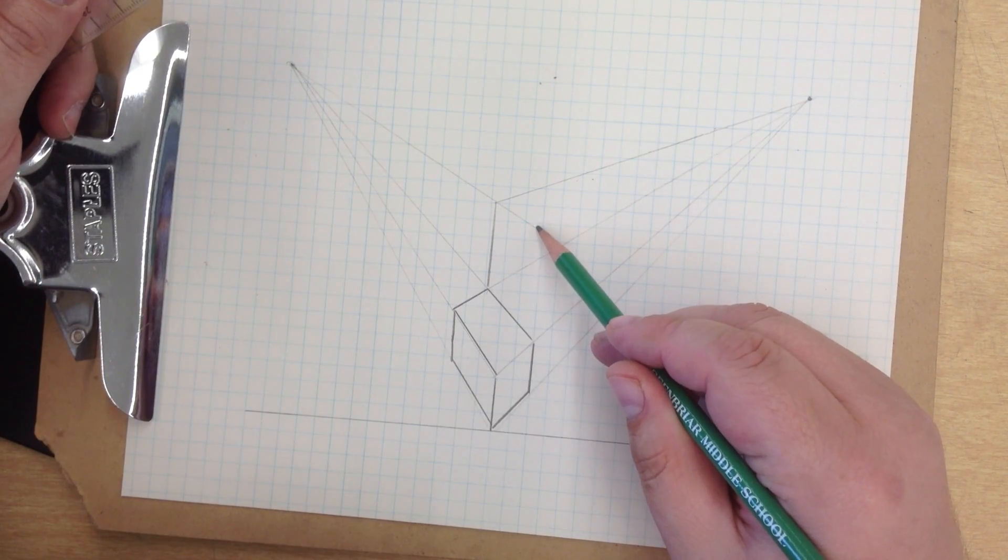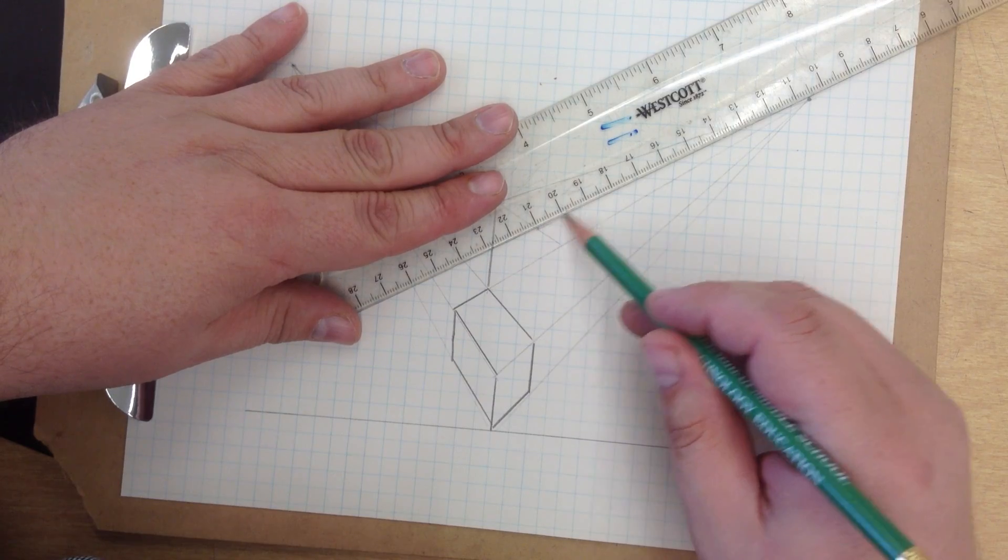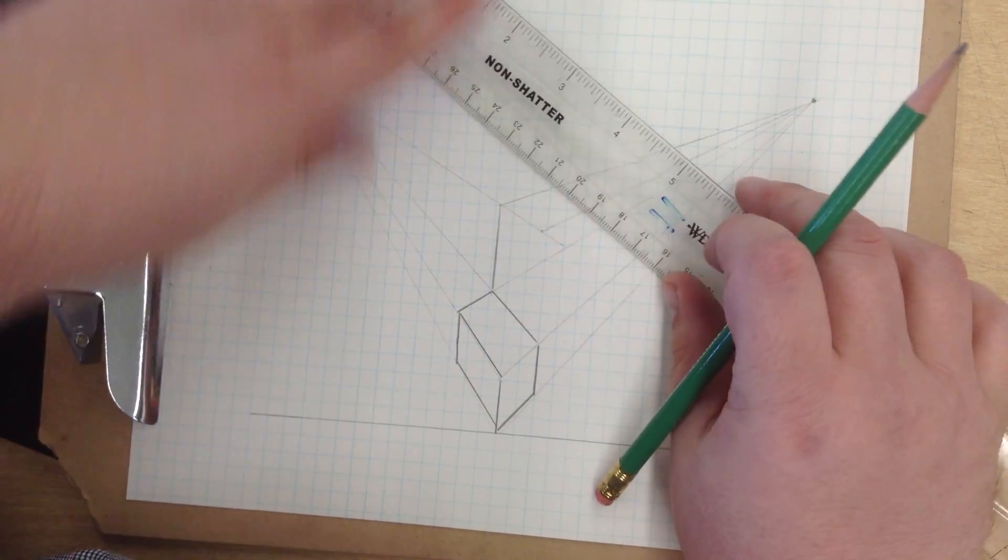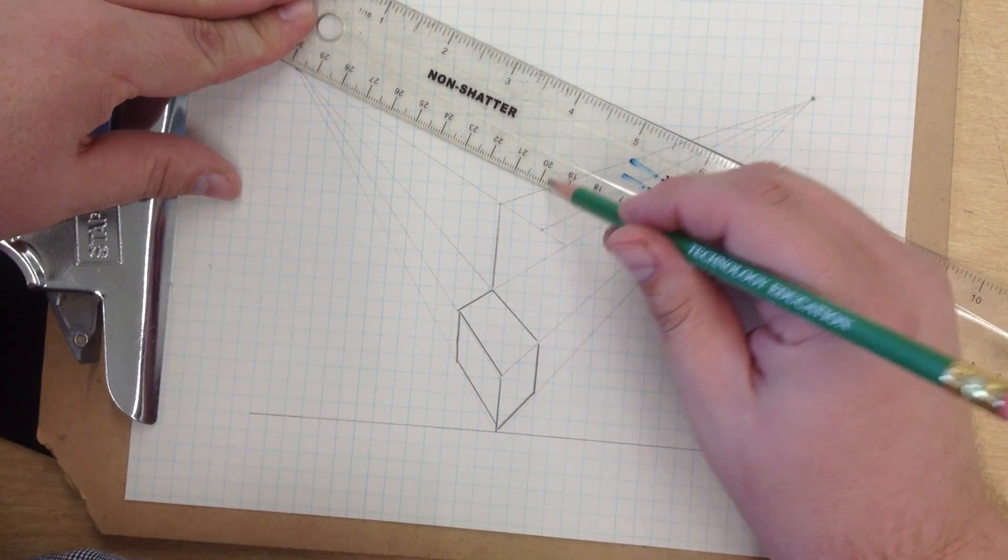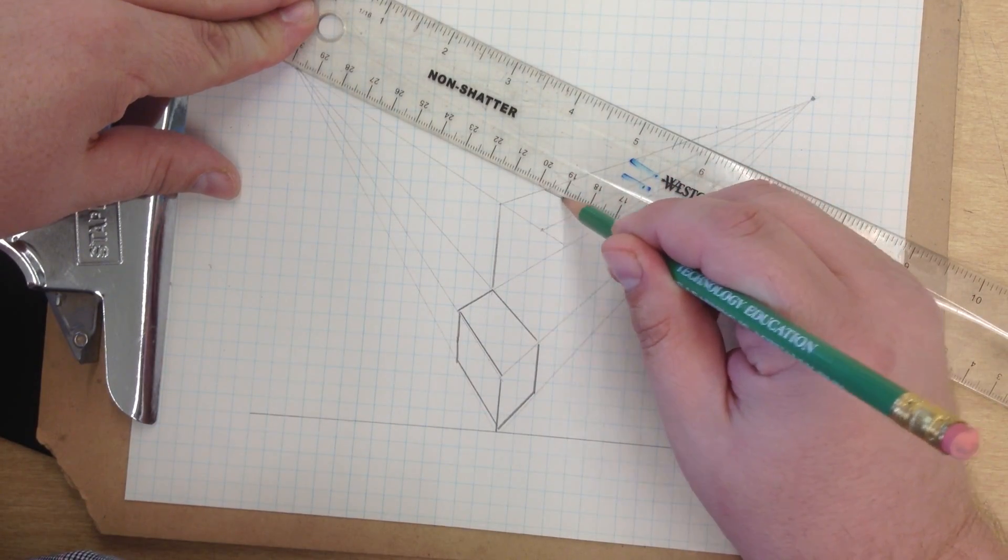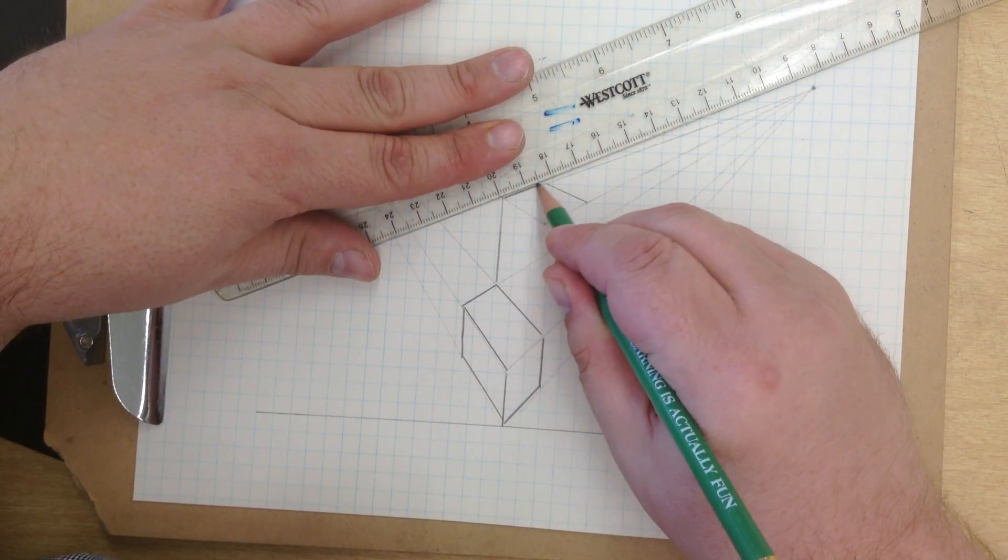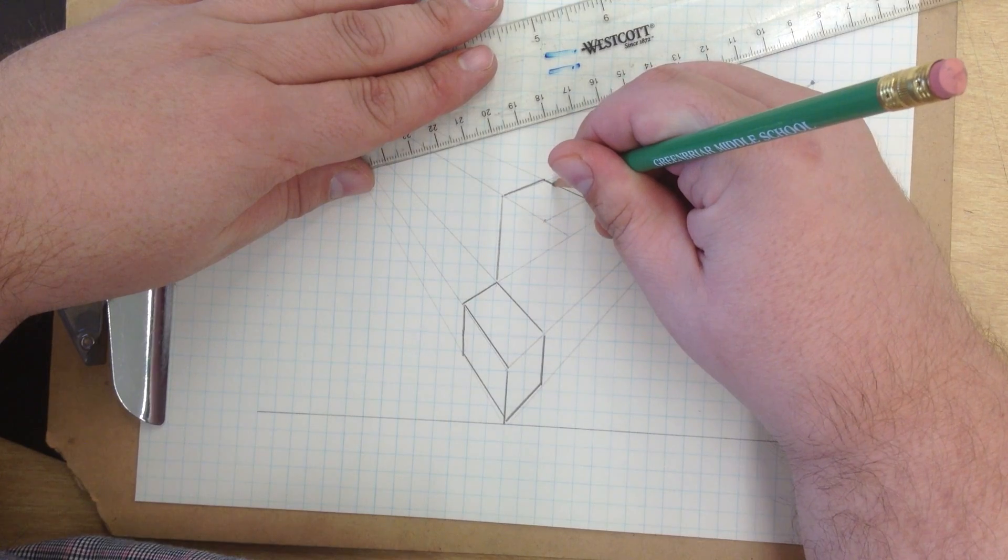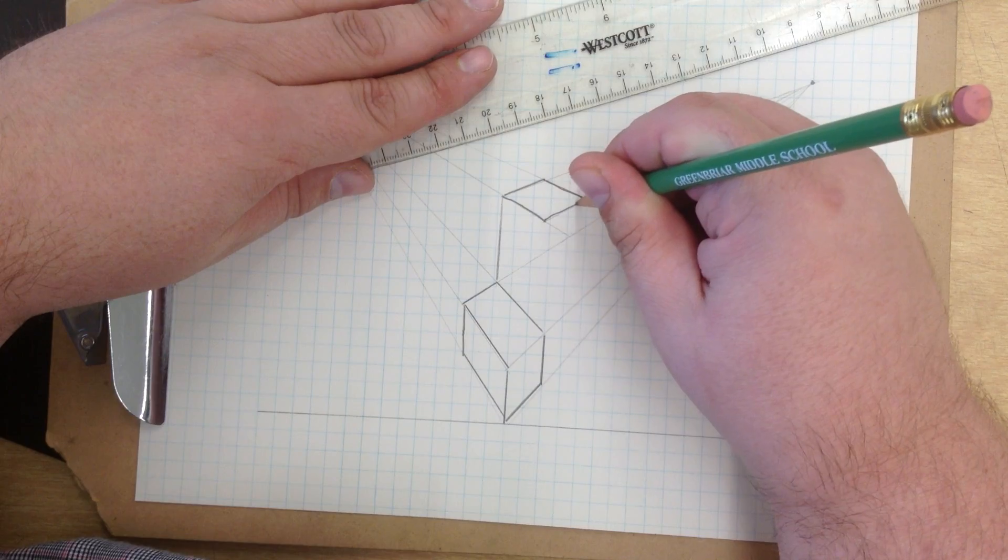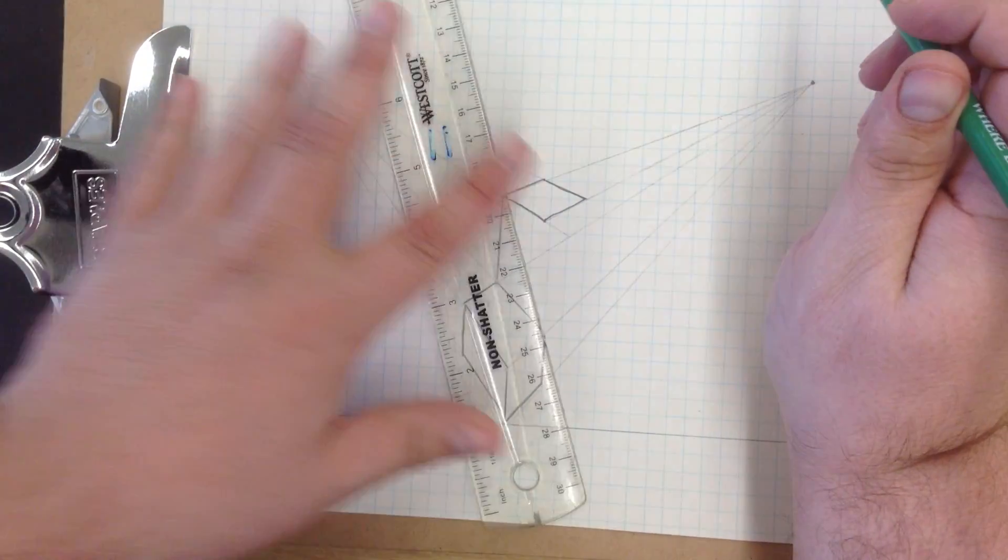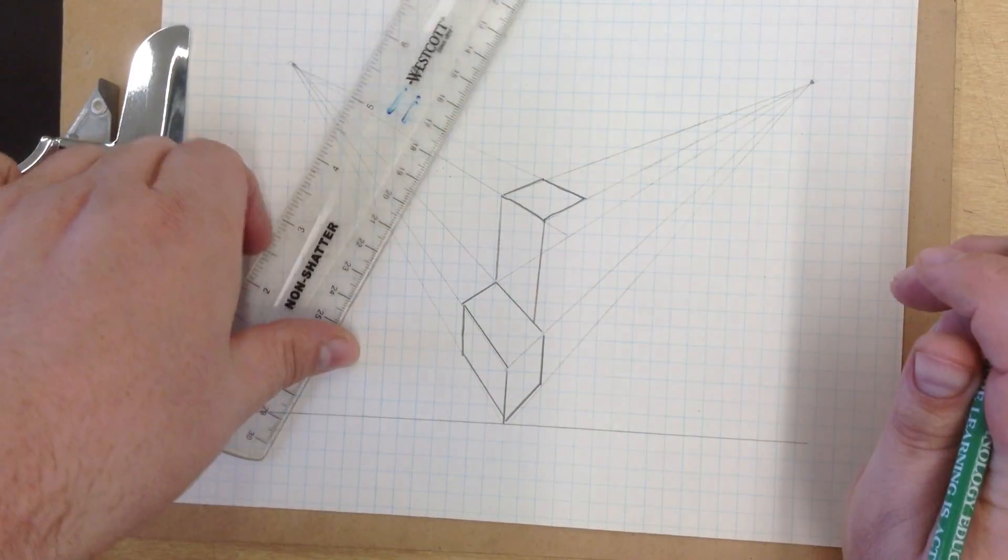I'm going to say that it ends right there. Connect with my vanishing point. I'm going to say that it's about that wide. Right there. So now I have my top square lined out. I'm going to darken it just so I can see it a little bit better, and I'm going to drop a vertical just like that.